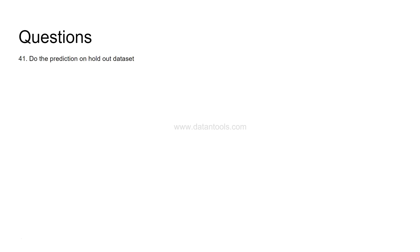The earlier question was about splitting the data into train and test and fitting a model. Now what I'm asking you is: do the prediction on the holdout data set. The holdout data set is nothing but the test data set — the x_test data set — which you would have created, holding 30% of the observations. It will give you the predicted value on data that the model has not seen.